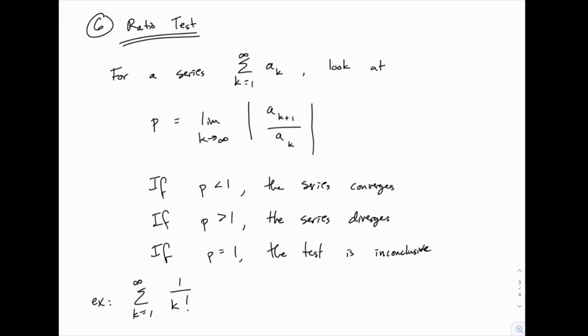It looks really complicated at first, but all we're going to do is think about what the form of the series is, and then what the form of a_{k+1} would be, which is pretty simple. Then we'll do a little algebra to see what that limit comes out to. So it's relatively simple in practice.